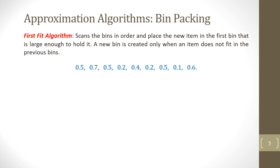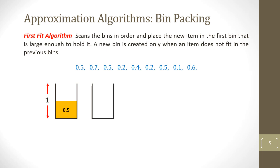Another approximation algorithm we can use is the First Fit algorithm, which scans the bins in order and places the new item in the first bin that is large enough to hold it. A new bin is created only when an item does not fit in any of the previous bins. Let's apply the First Fit algorithm to the items of various sizes. The first item will go to the first bin, and since the second item is larger than the empty space in the first bin, it will go to the second bin.